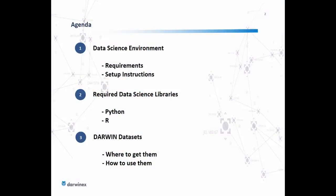Agenda-wise, we'll start off with the requirements and setup instructions for a typical data science environment, or at least a sound start to one, that will allow you to get on and embark on Darwin research fairly quickly and conveniently. Then the required data science libraries for the languages we've chosen — Python, R, and C++. And finally, Darwin datasets: the crux of this whole presentation — how to get them, where to get them, and how to import them into your environment.